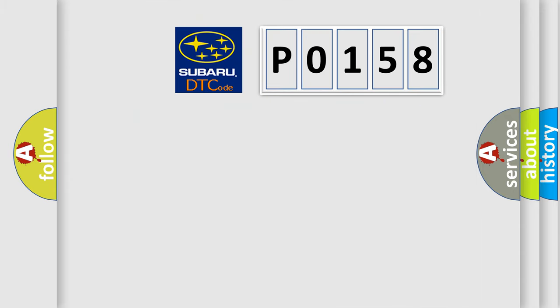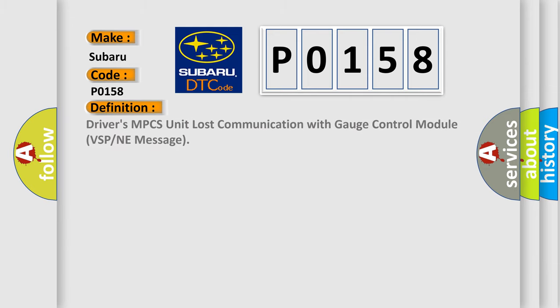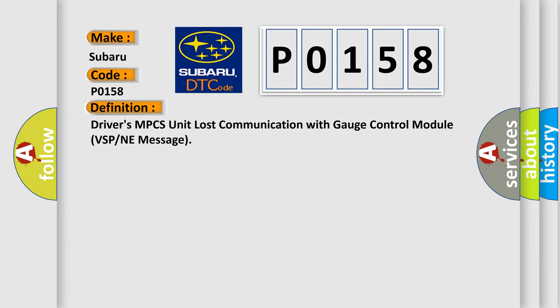So, what does the diagnostic trouble code P0158 interpret specifically for Subaru car manufacturers? The basic definition is: Driver's MPCS unit lost communication with gauge control module VSP or any message.